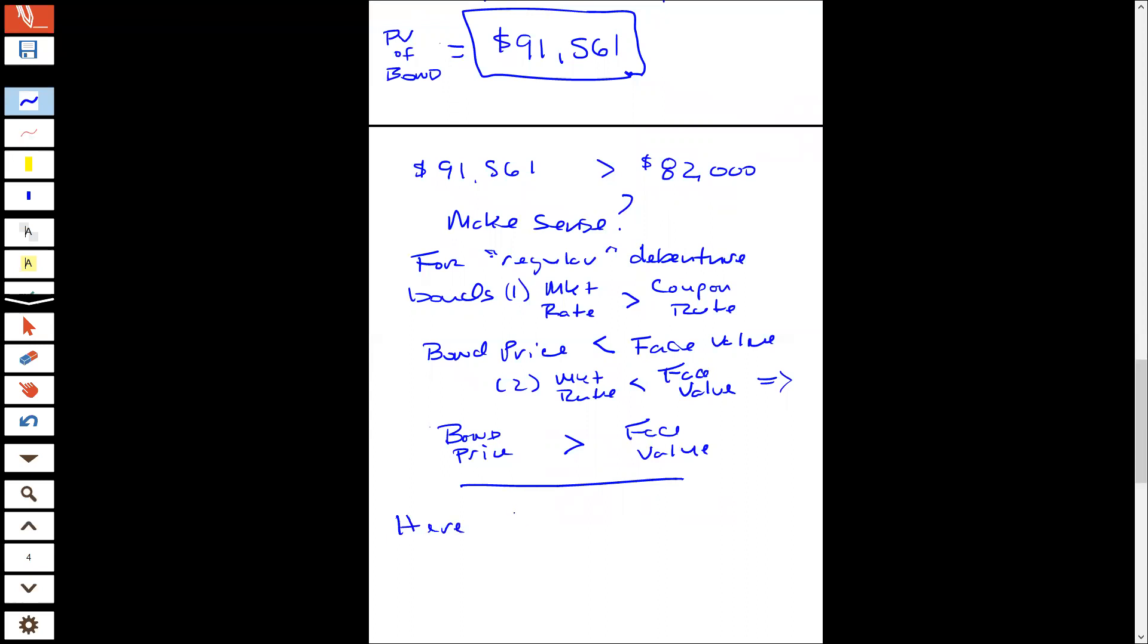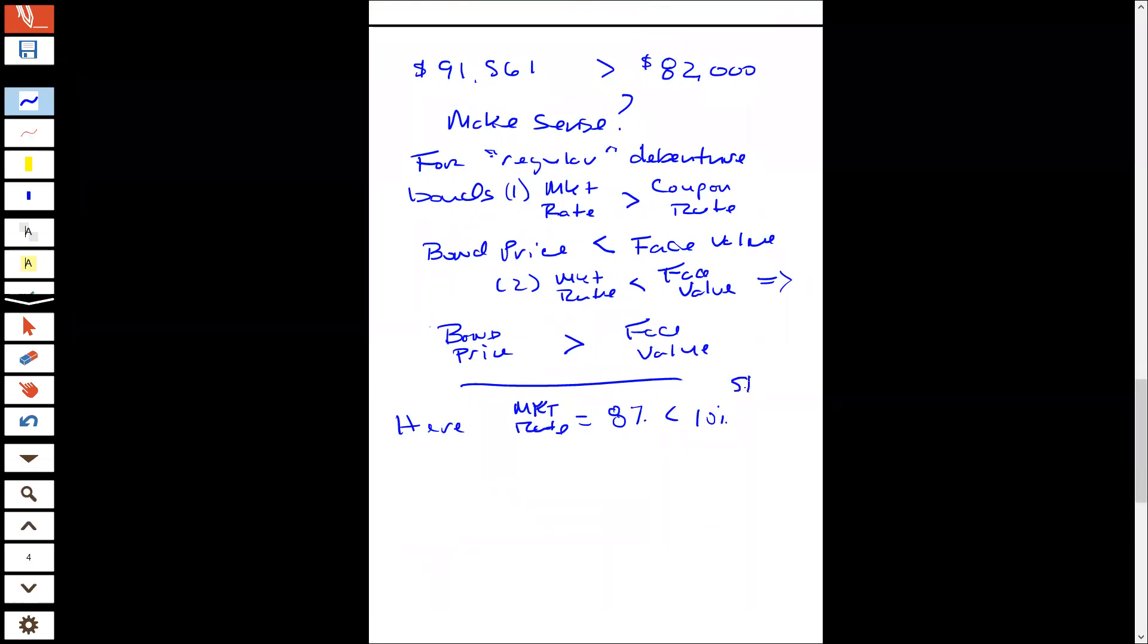So here market rate equals eight percent less than 10 percent stated rate. So it should be, excuse me, rates go down when prices go up, should be greater than 82,000. And it is. So at least it's the right direction. It may not be, we may have made some kind of error where we hit the wrong digit on our calculator or something, but at least we know we didn't get something totally out of whack.